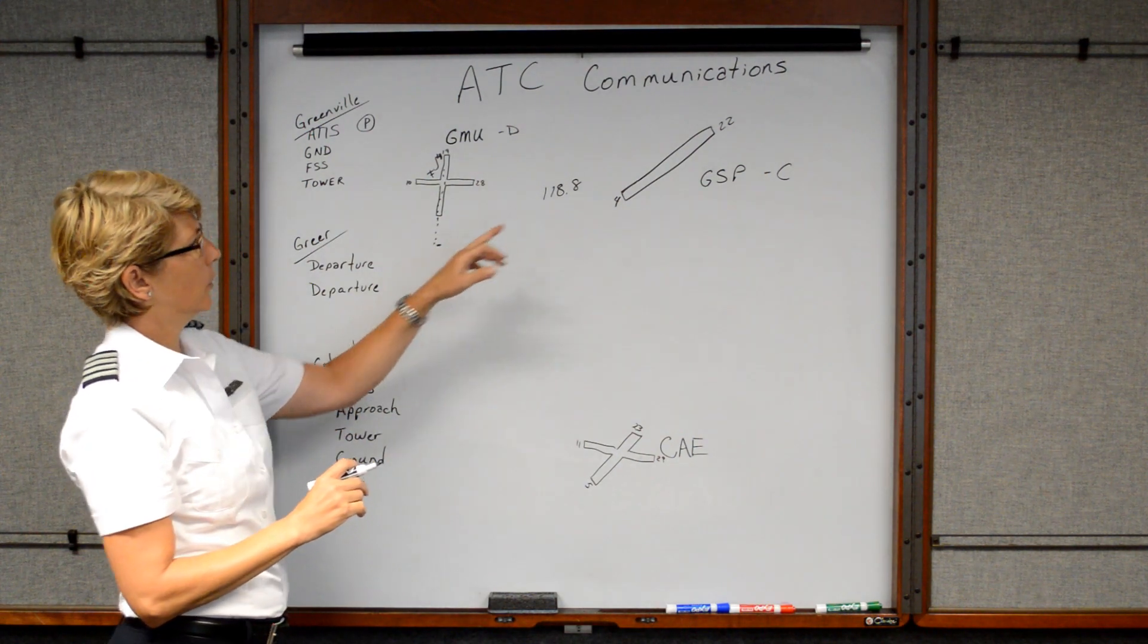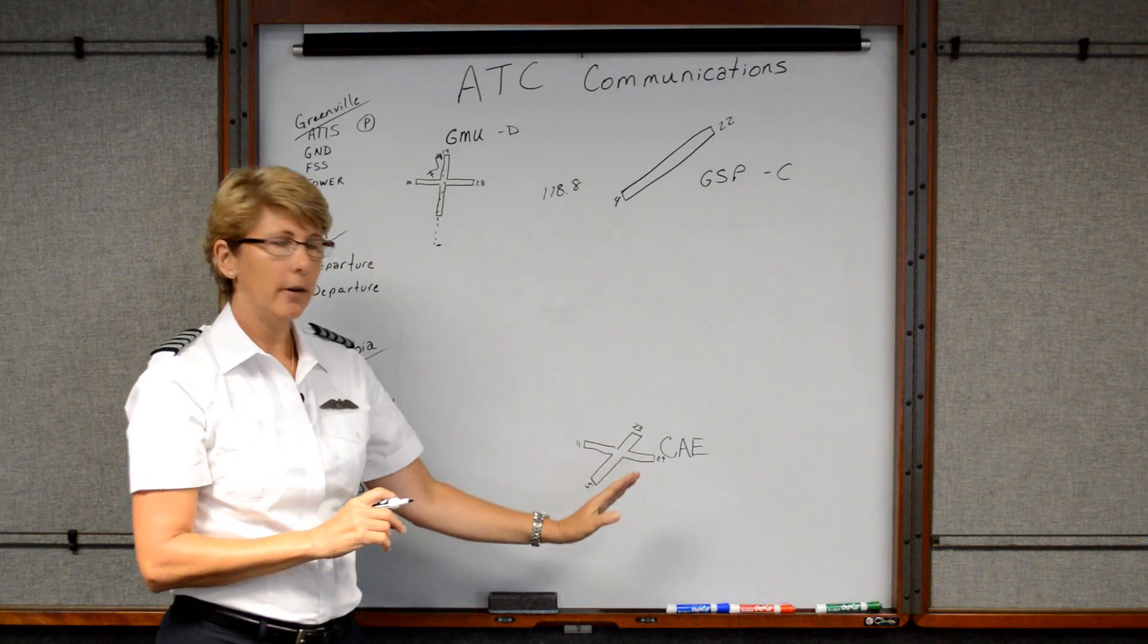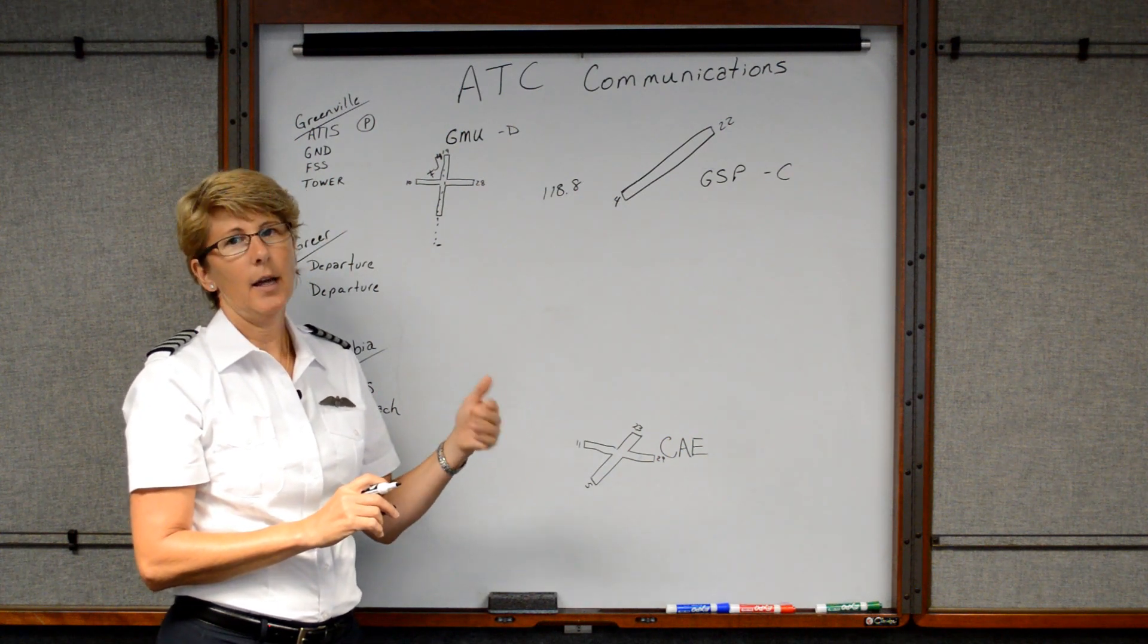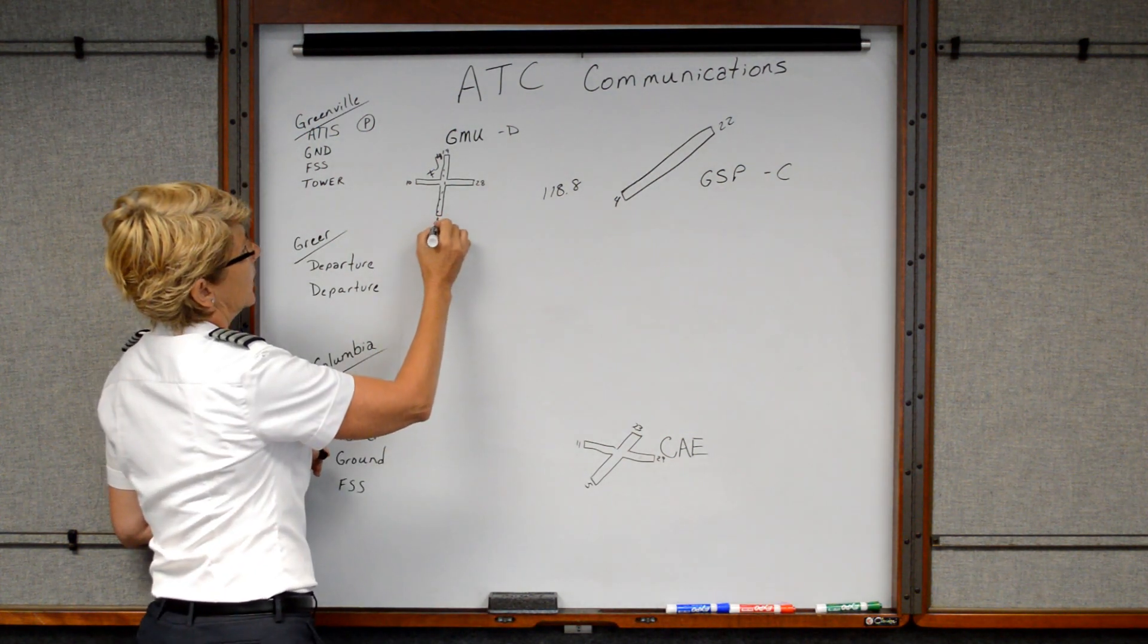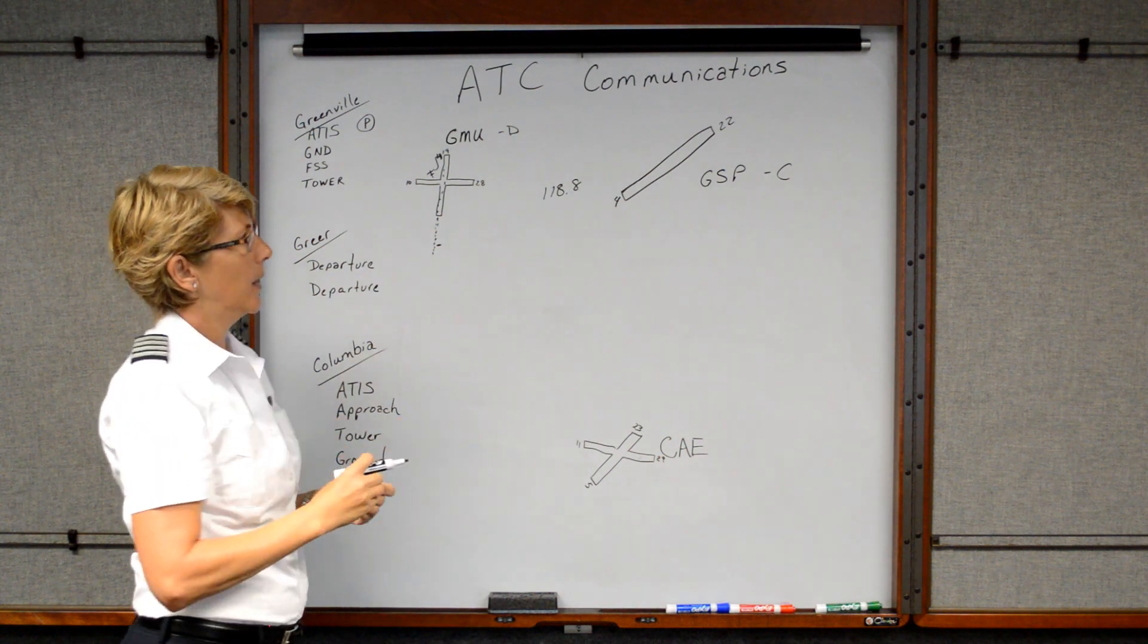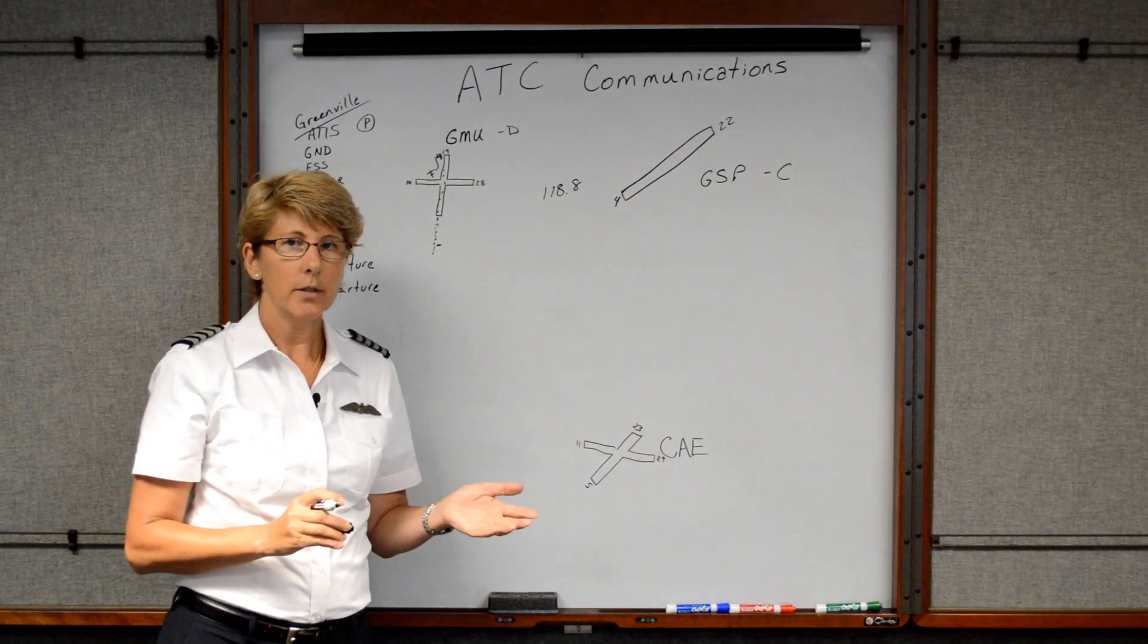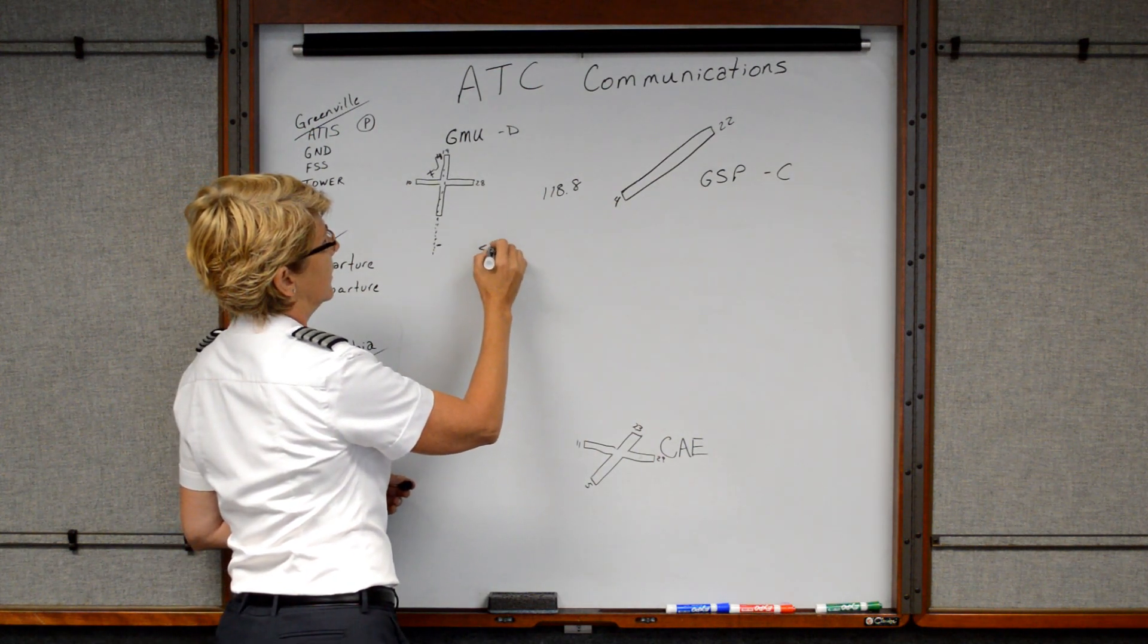So we would call Greer, we would say Greer Departure. We call them Departure because we're departing the area. So we'd say Greer Departure, Skyhawk 870 Sierra Papa, 2000 climbing 3000 runway heading. And that way they know that we are going to continue this way until they tell us something other. So then they usually come back and they may say something like 870 Sierra Papa radar contact, climb to your VFR requested altitude. So they're giving us permission to continue to climb up to 5,500.